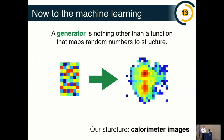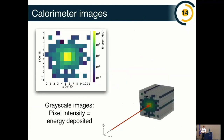Now for the machine learning. I like to think of generators as a function that maps noise to structure — you start with some random noise and you want a model that learns to generate that into structure. Our structure here is going to be calorimeter images, so we're going to think of a calorimeter as an image and use a generative model — in this case a GAN — to generate those images.